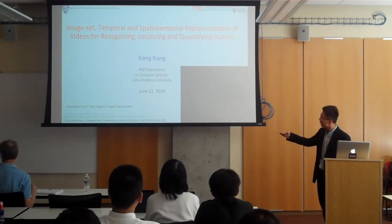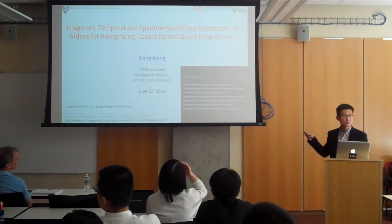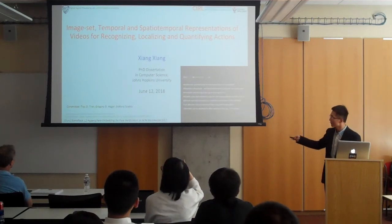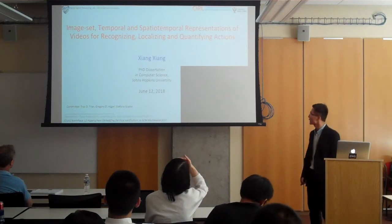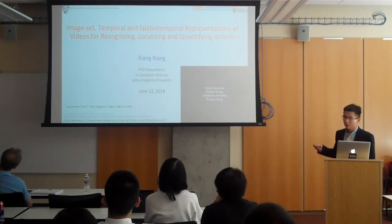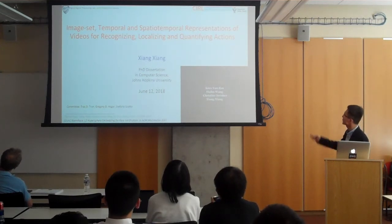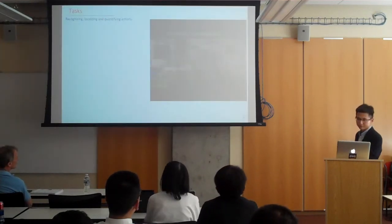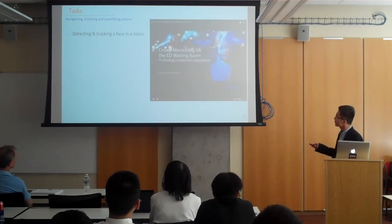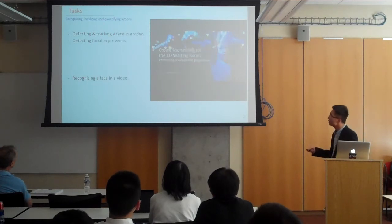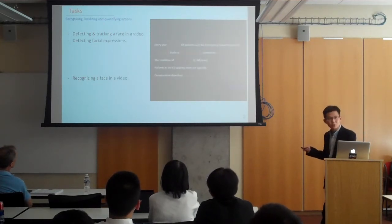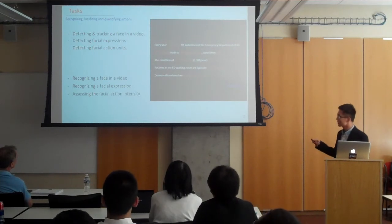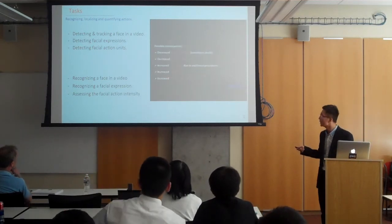For the reference done by others, for example, these CVPR papers, it will be shown in gray color and quoted. For reference done by myself in collaboration with my collaborators, it's shown as normal. I'd like to formally start my dissertation talk now. The title is Image Set, Temporal and Spatial Temporal Representations of Videos for Organizing, Localizing and Quantifying Actions. But what does it mean? Basically, it means detecting and tracking face in a video, recognizing a face in a video. It can also mean detecting facial expressions in a video, recognizing a facial expression, detecting facial action units, assessing the facial action intensity and also the facial action units intensity. And just take face as an example. The same analogy can be adapted to a human.